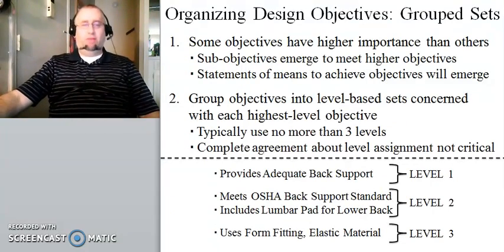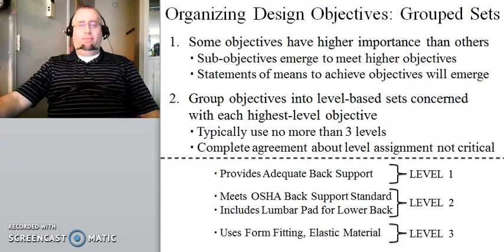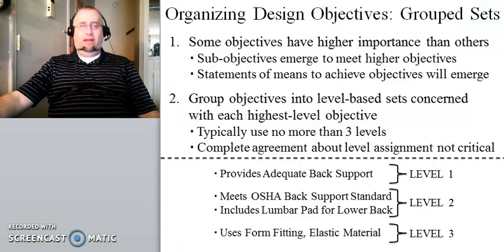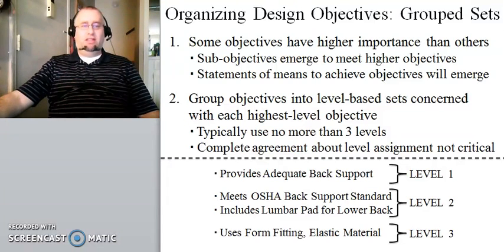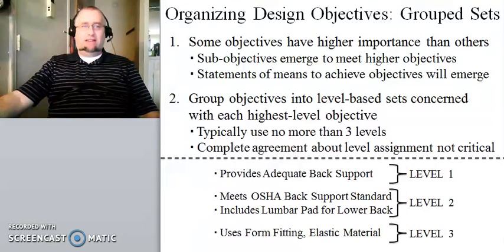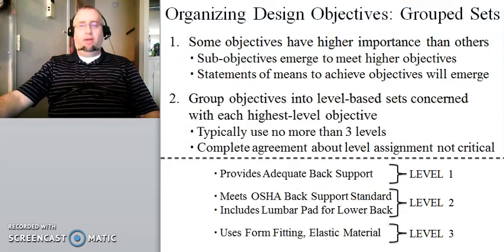There are really two ways to do this. The first way to organize design objectives is called grouped sets. As we convert the customer needs statement into more quantitative design objectives, we find that some objectives have much higher importance than others. Sub-objectives often emerge as a way to meet the goal set by the higher objectives, and sometimes statements of desired means to achieve particular objectives emerge as well. So we begin to see a hierarchy that we can use as an underpinning for a method of organization.